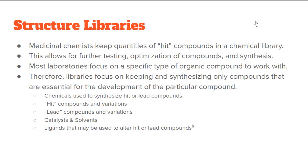When we get hits, we need to consider the concept of structure libraries. Medicinal chemists keep quantities of hit compounds in a chemical library, which allows for further testing, optimization, and synthesis. Most laboratories focus on a specific type of organic compound to keep down costs. Libraries focus on keeping and synthesizing only the essential compounds for developing a particular drug. These can include chemicals used to synthesize hit or lead compounds, the hit compounds themselves and variations, lead compounds and variations, catalysts and solvents, and ligands used to alter hit or lead compounds.